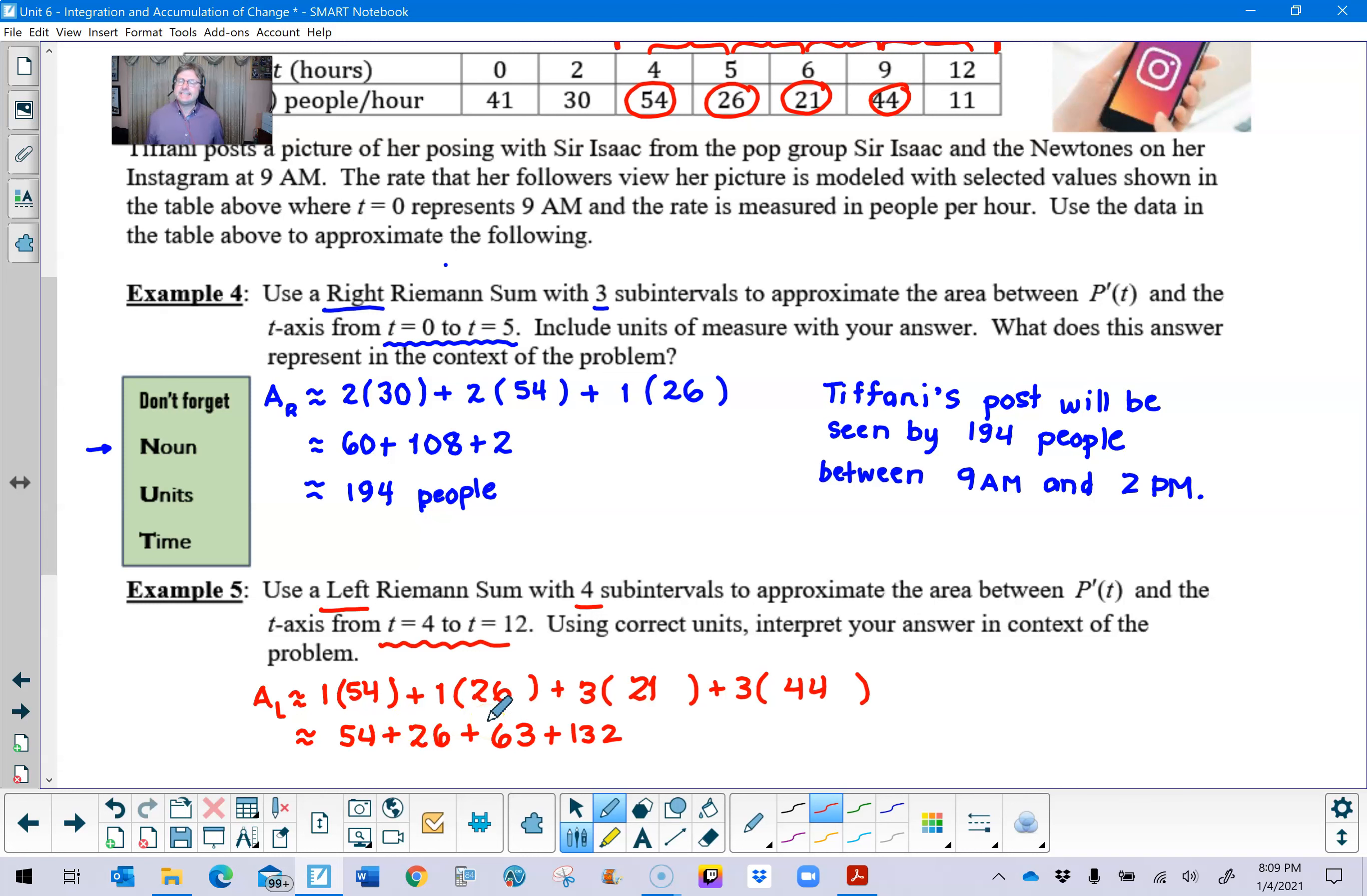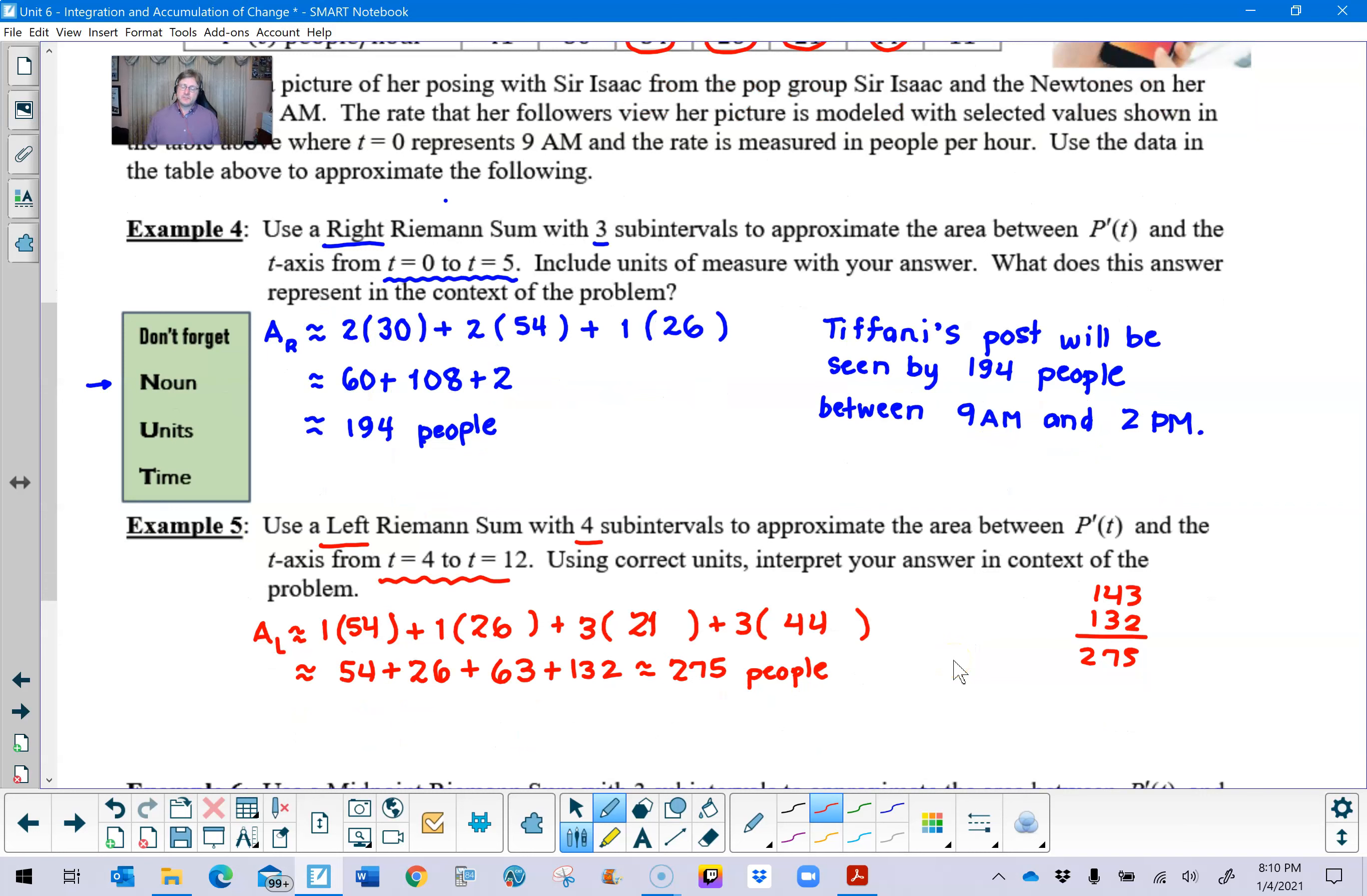And then you have 80 and 63, which is 143. And then 143 and 132 sounds like it's going to be about 270 something, right? 275 maybe? So that's what we are approximately equal here. 275. It would be in terms of people.